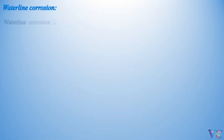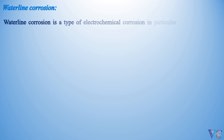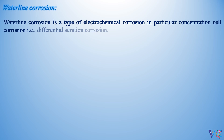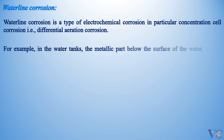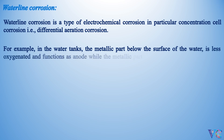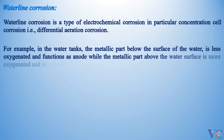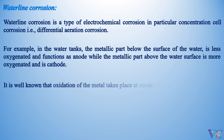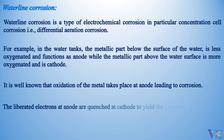Waterline corrosion is a type of electrochemical corrosion — in particular, concentration cell corrosion, that is, differential aeration corrosion. For example, in water tanks, the metallic part below the surface of the water is less oxygenated and functions as the anode, while the metallic part above the water surface is more oxygenated and is the cathode. It is well known that oxidation of the metal takes place at the anode, leading to corrosion. The liberated electrons of the anode are quenched at the cathode to yield the corrosion product.